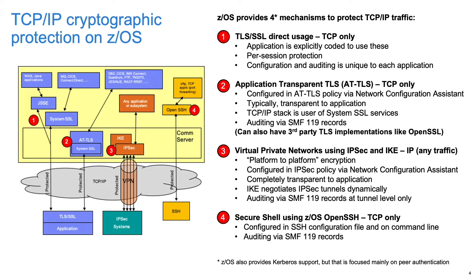The second approach is to use the application transparent TLS, AT-TLS, provided by ZOS Communication Server. In AT-TLS, instead of modifying each application to use TLS, you write policy rules that describe the traffic you want to protect and how you want to protect it. When connections match those rules, AT-TLS calls System SSL to negotiate TLS protection using the parameters specified in the policy rules. This is typically transparent to the application.